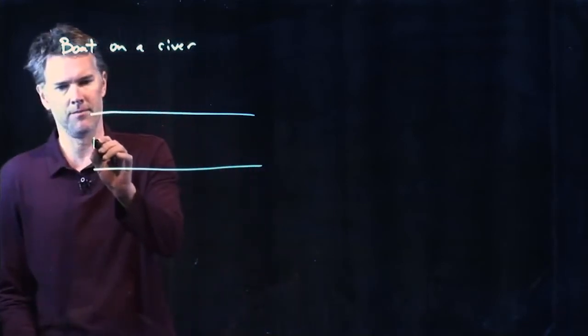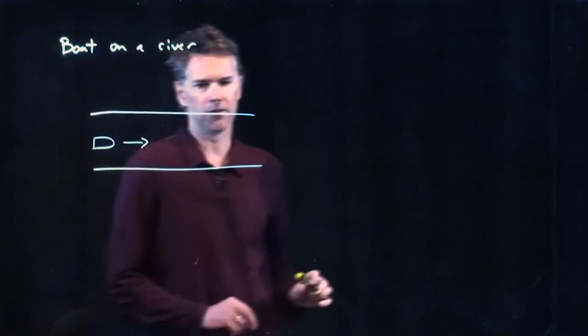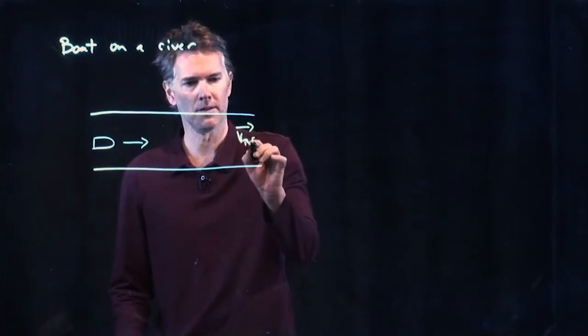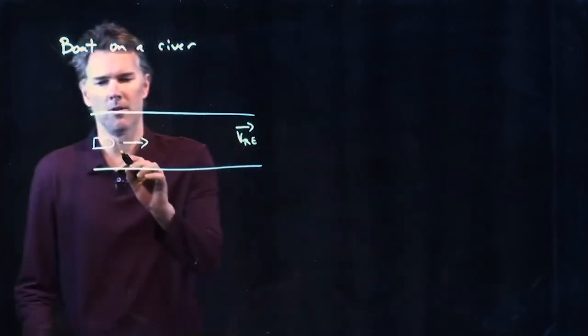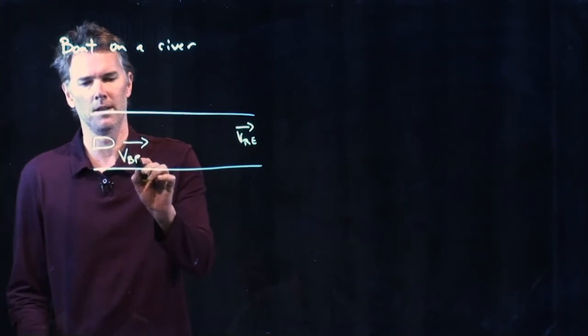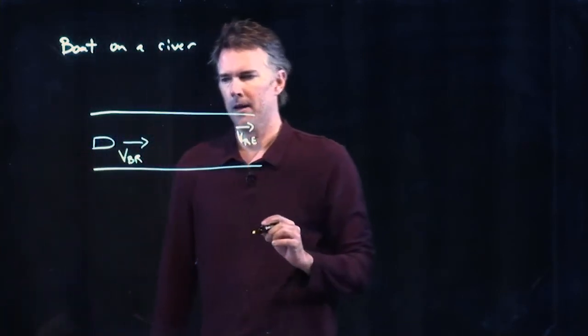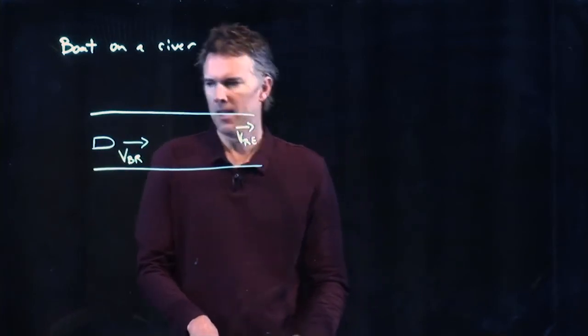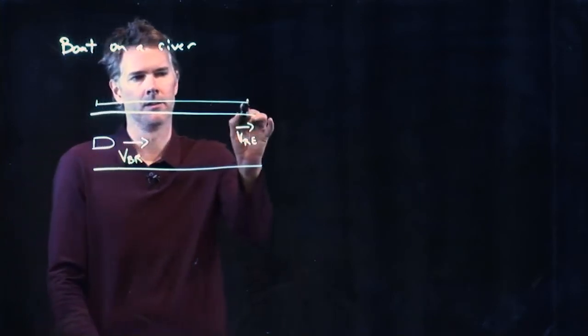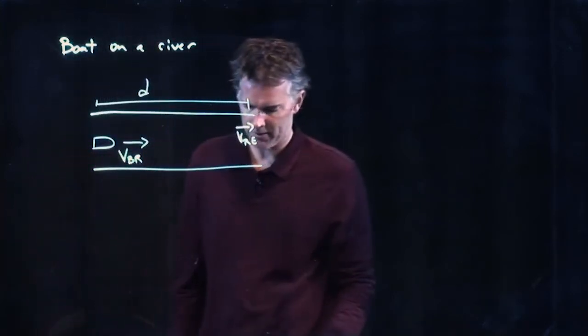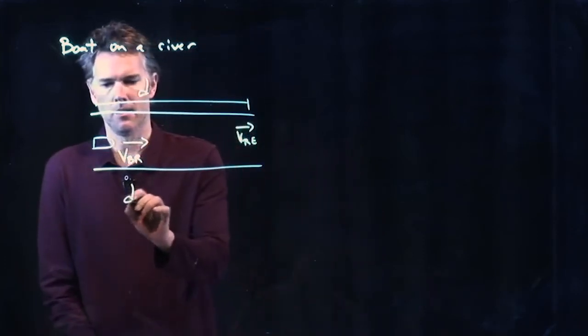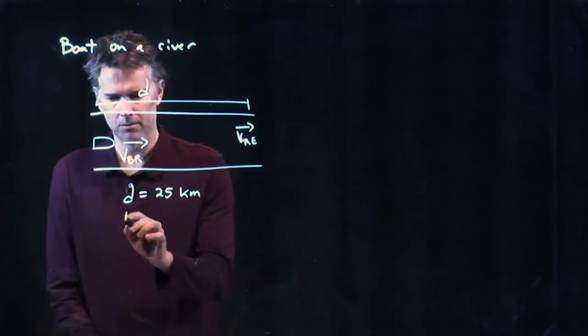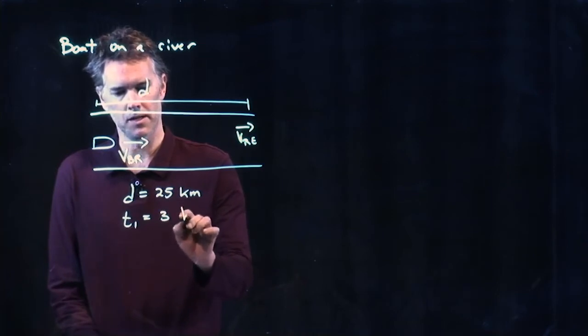Here's our river. Here's our boat and it's going downstream. We have some velocity of the river relative to the earth. We have some speed of the boat relative to the river, and when we add those up we're going to get the speed of the boat relative to the earth. And what they tell us is that this distance, D, is 25 kilometers and the time it takes the boat to cover that is three hours. We'll call that T1 going down the river.